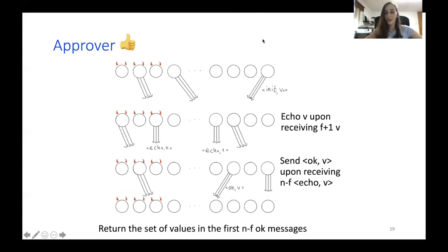And I'll describe it first without committees in a high level manner. It starts by each process sending its value to all other processes. Then when a process hears the same value, let's say v, for f plus one times, it echoes v in the system, boosting its presence. And then if someone hears n minus f echo messages on the same value v, it sends an okay message on v, providing the graded agreement property. Then to finish off, every process returns the values it heard of in the n minus f okay messages it receives.